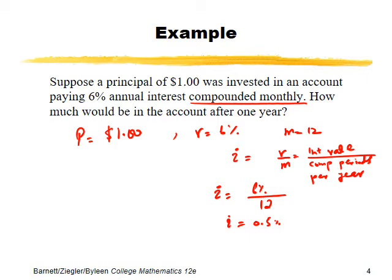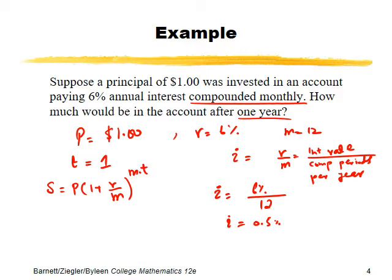How much would be in the account after one year? As in simple interest, we always express time in number of years, so t equals 1. The formula for compound interest — in the book they denote it by A, but we denote it by S to differentiate. The formula is S equals P times (1 + r/m) raised to the power m times t, where m is compounding periods and r is the given interest rate.